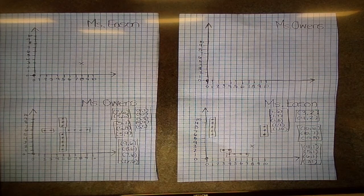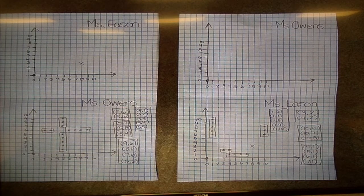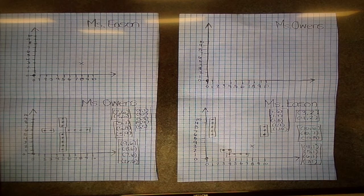Miss Owens is going to do the same thing on the top part of her paper to show that she guessed 8-3, and it was a miss. Now it's my turn. I'm going to choose an ordered pair that I think will hit one of Miss Owens' boats.